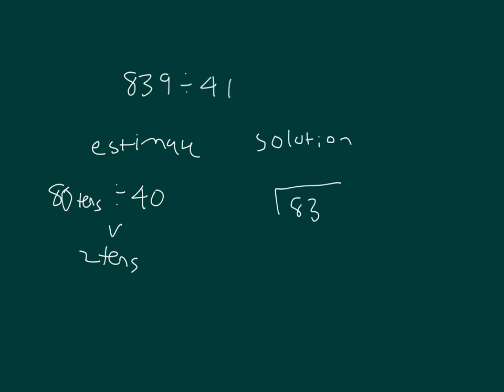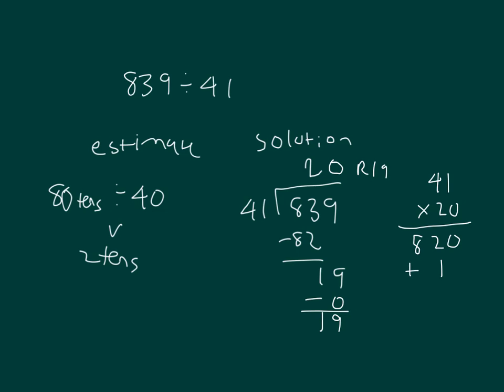So again, we had 839 divided by 41, and we start with those 2 tens that we were using. 2 times 41 is 82. 83 minus 82 is 1, and we bring down the 9. Take 19 here and divide it by 41. It's 0, because 0 times 41 is 0, and 19 minus 0 is 19. So our remainder is 19. Write a check. 41 times 20. Place a 0. 2 times 1 is 2. 2 times 4 is 8. And add in the 19 to get 839. So that's our check. So that's how it is that you can divide by two digits and receive a two-digit answer.